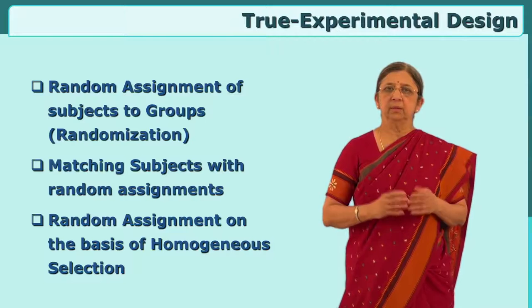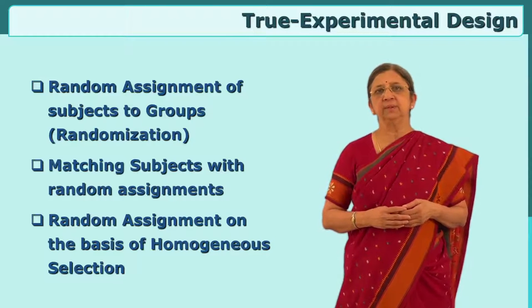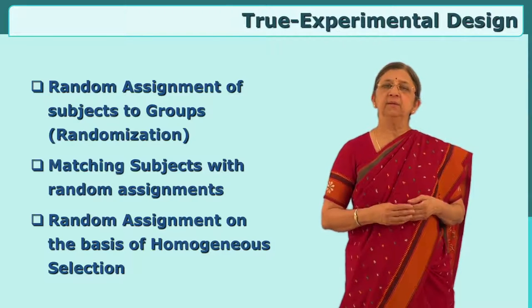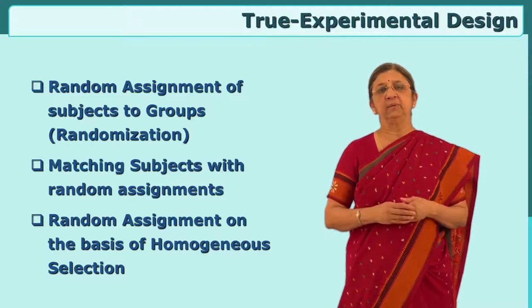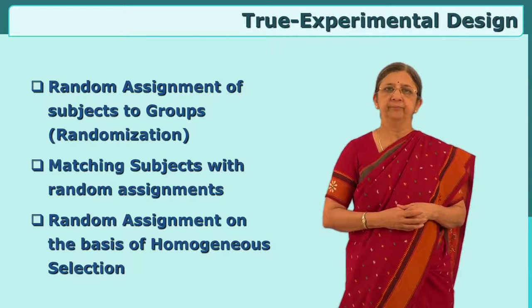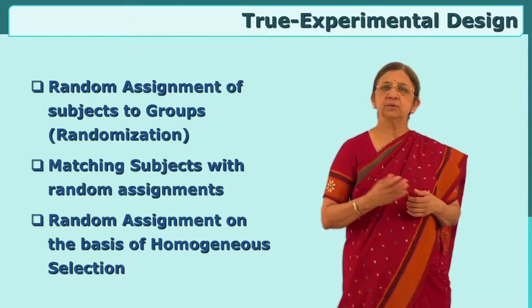Random means every subject in the population you have selected has every chance of being in your group. For random assignment you should have a large sample size — more than 30. If you have only 10, then 5 will go to each group and that will not really take care of the variables which should be randomly assigned. You should select a large sample and then assign subjects to experimental and control groups. This is called random assignment.